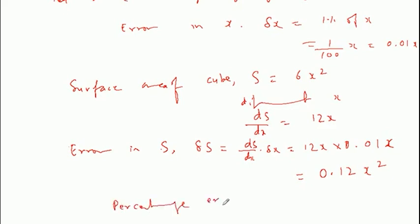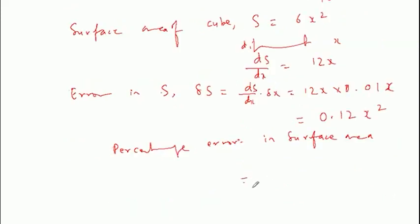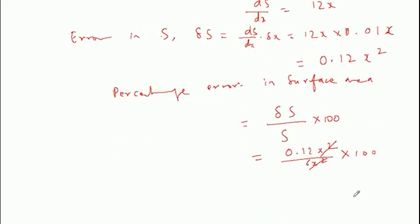Percentage error in surface area will be delta S by surface area into 100. 0.12x square, surface area 6x square into 100. x square x square cancel. This is how we cut down 0.02 multiply 100, 2 percentage.